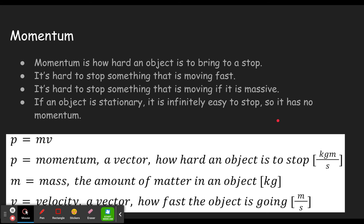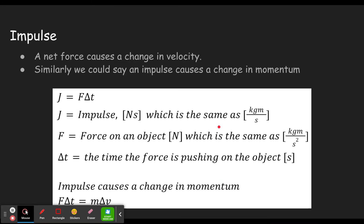If you did not see my video on momentum, I'll link it here. Remember, momentum is mass times velocity — it tells you how hard an object is to bring to a stop. Impulse is J, and that is a force acting for a certain amount of time. You push on something for a certain amount of time and that will cause a change in momentum. However much your force times time gives you numerically, that'll be the same change in your momentum.